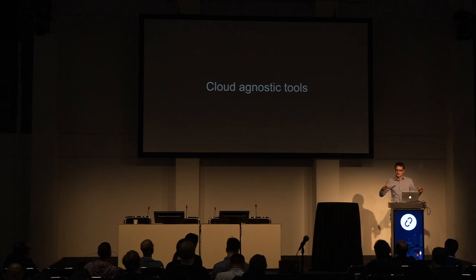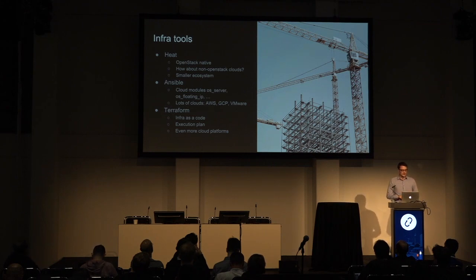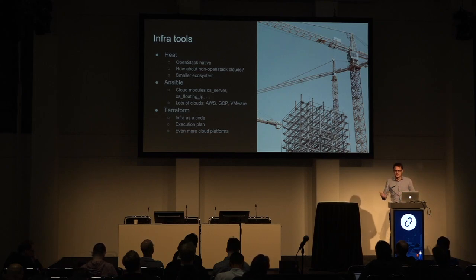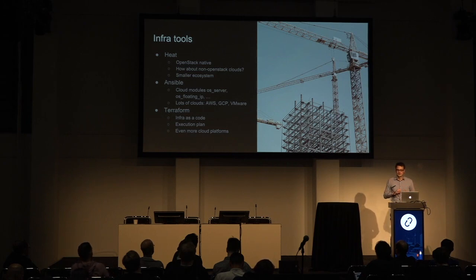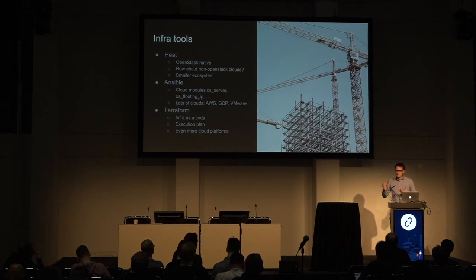Now I'll talk about the tooling needed to make all of this happen. Starting from the bottom — the infrastructure — there are three popular options to set up your OpenStack VMs. You could start with Heat, which is the OpenStack-native project. That works great, but it's OpenStack-only. If you want to do multi-cloud with some OpenStack and some non-OpenStack clouds, Heat is not the best choice since it won't work in AWS or Google Cloud. Heat also has a smaller ecosystem and it's difficult to find generic Heat templates on GitHub. If you have in-house expertise and are OpenStack-only, it's a really good tool, but it's not for everybody.